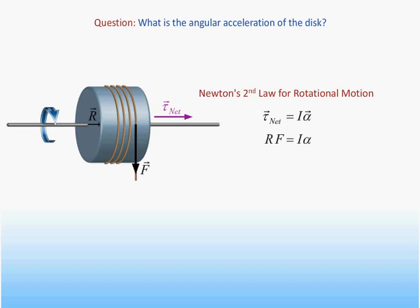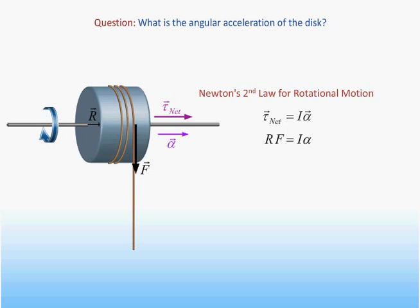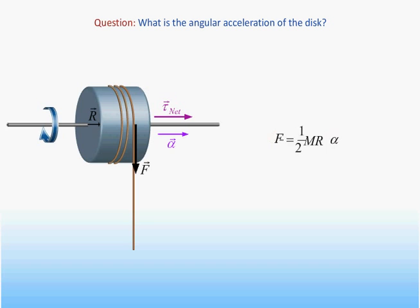We will now look at the right-hand side of the equation. The direction of the angular acceleration must be the same as that of the torque. Consequently, since the disk was initially at rest, the disk rotates in the direction shown and its speed increases with time. Since we know the magnitude of the moment of inertia of a solid disk about its axis of symmetry, we can solve our equation to determine the magnitude of the angular acceleration.